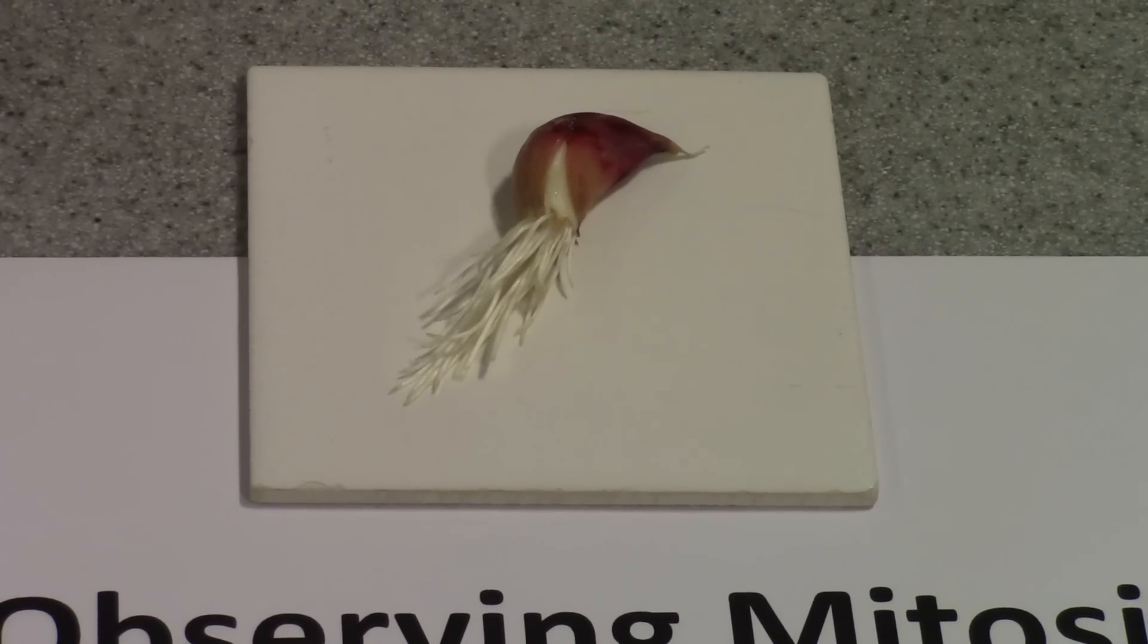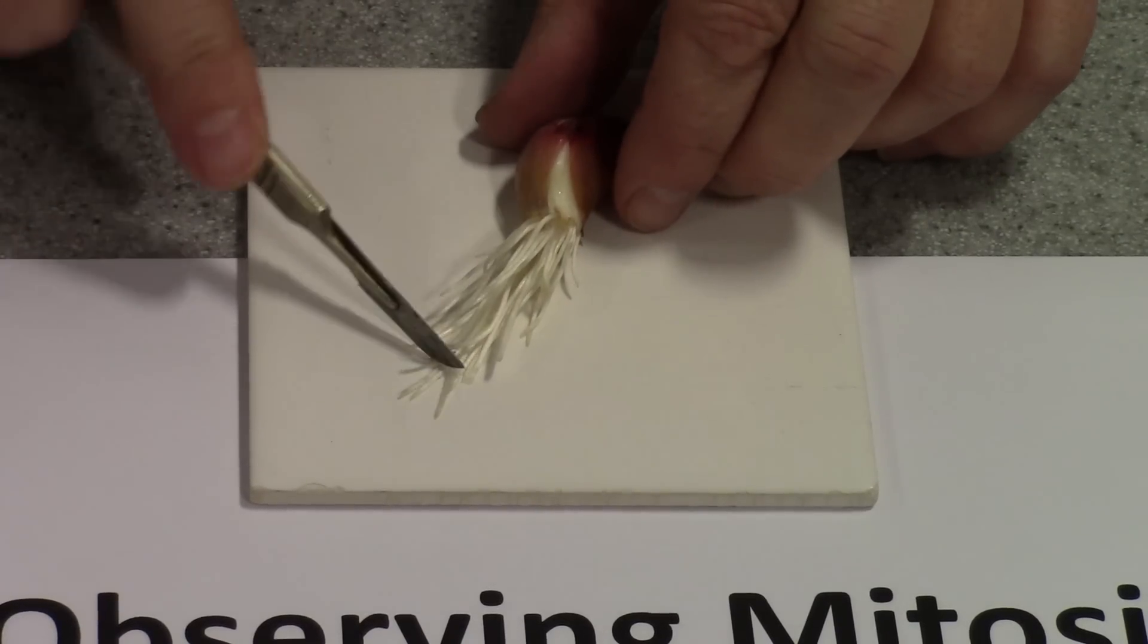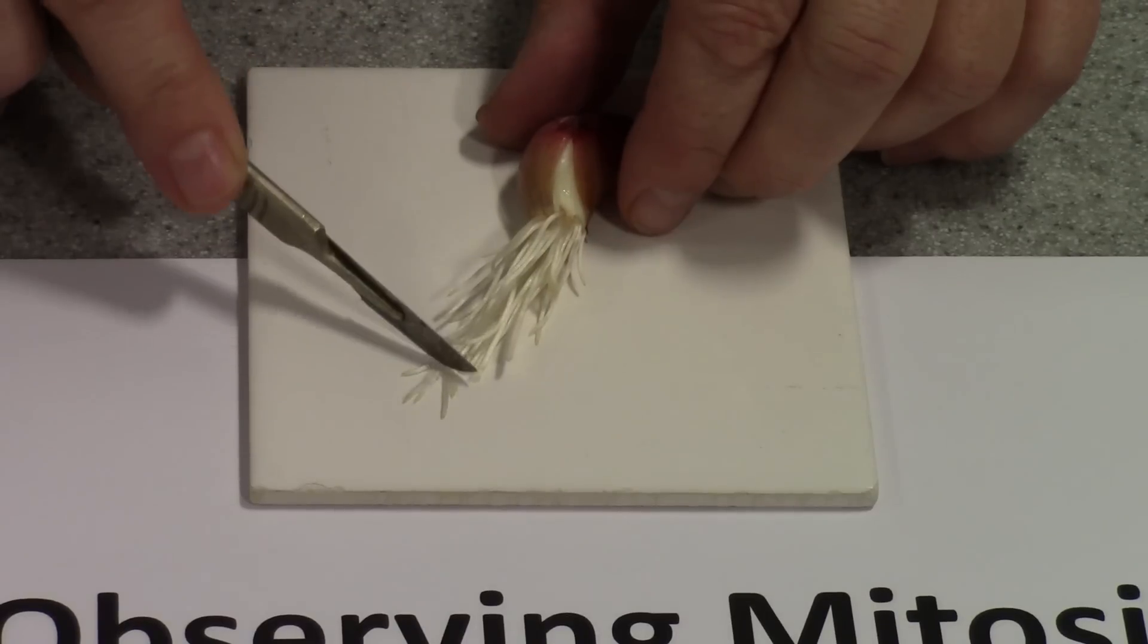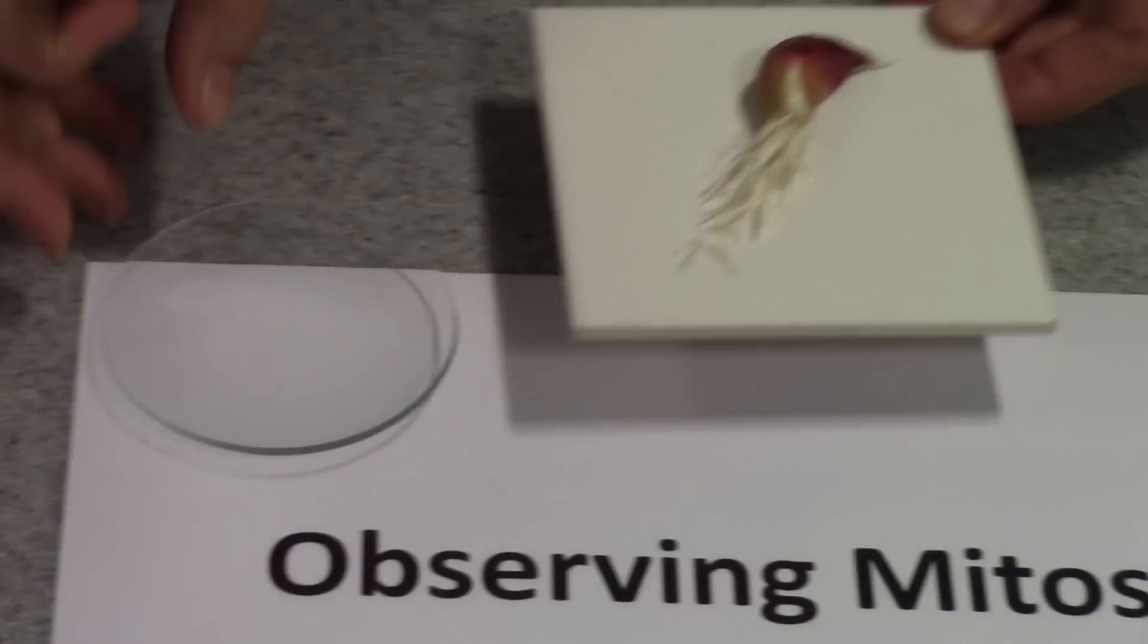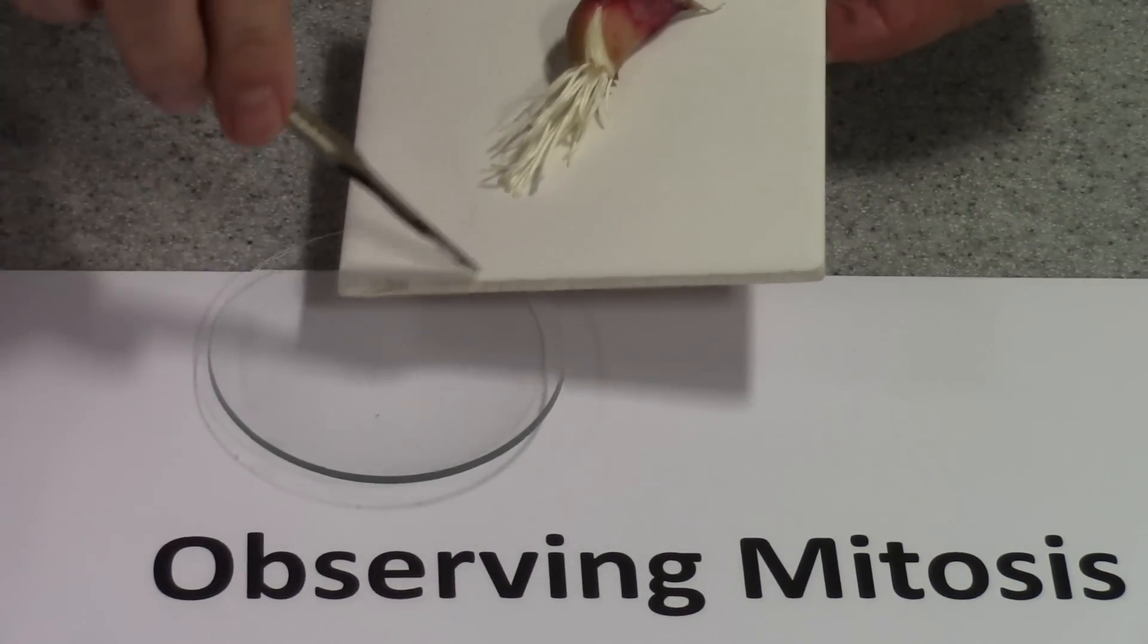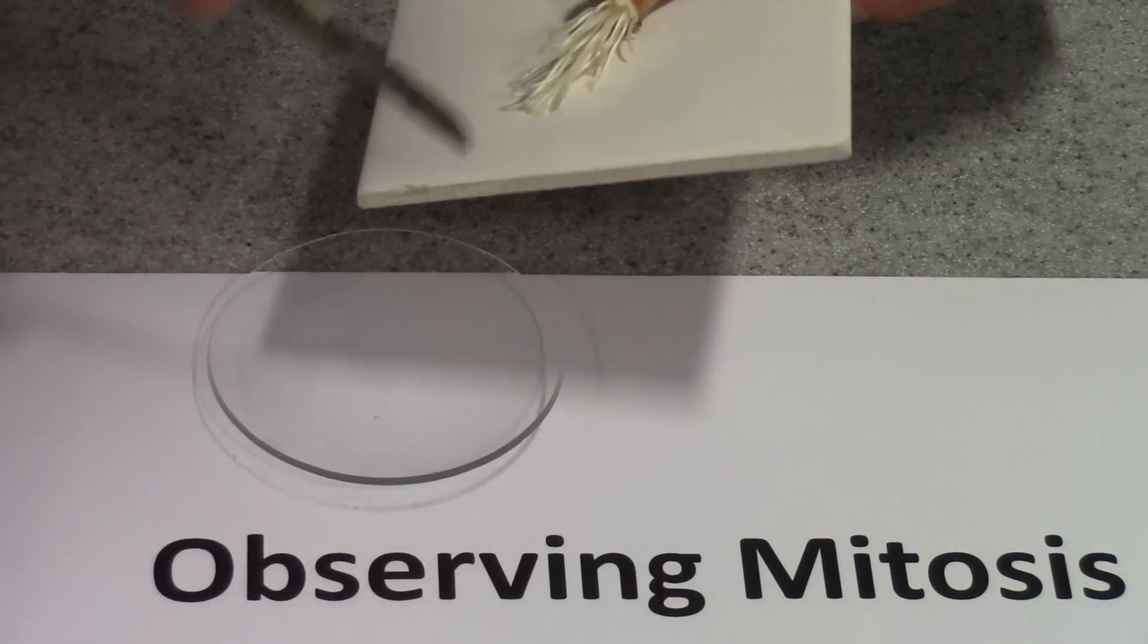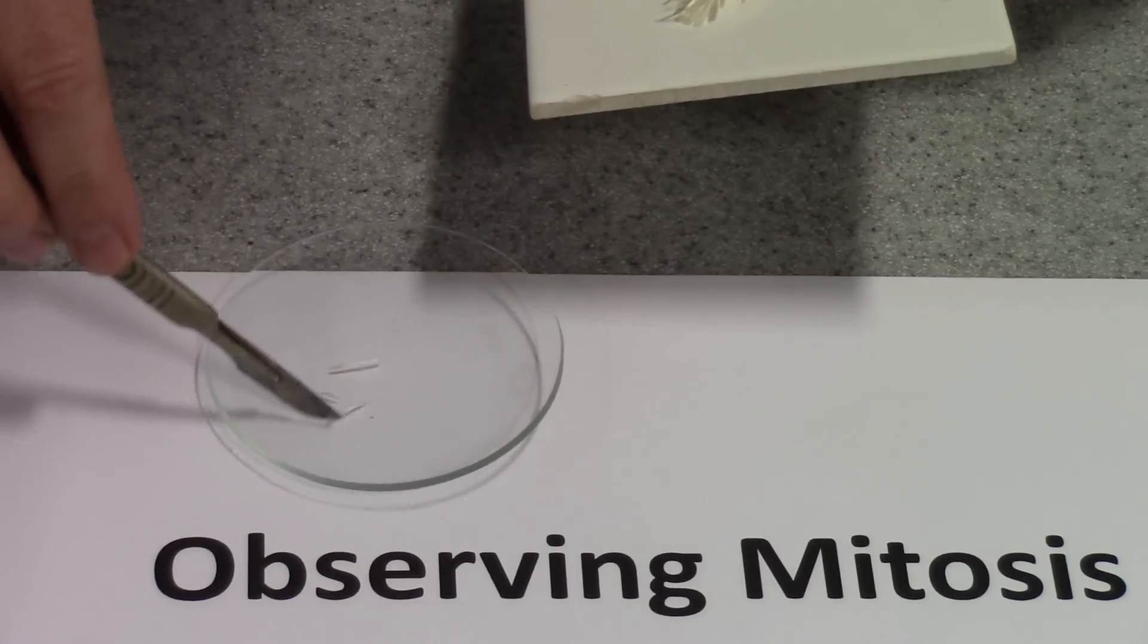So the first step in our procedure is to cut the 0.5 centimeters, 5 millimeters-ish of a number of root tips and place them in a watch glass. Easier said than done. There we go, we've got a couple there.